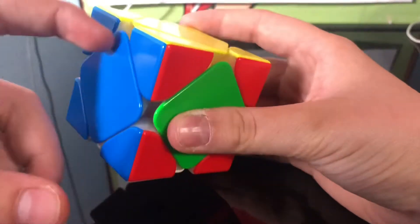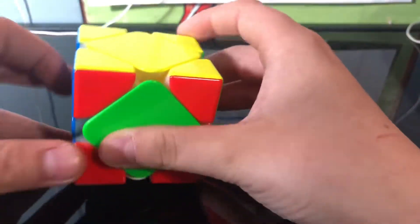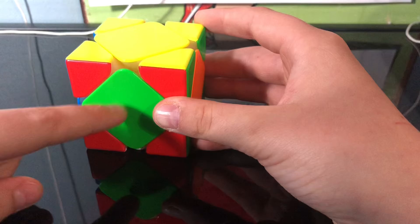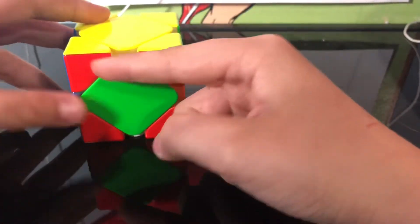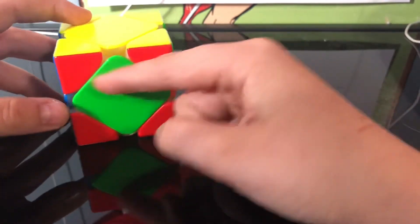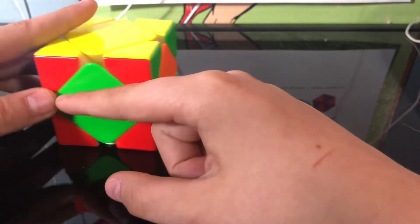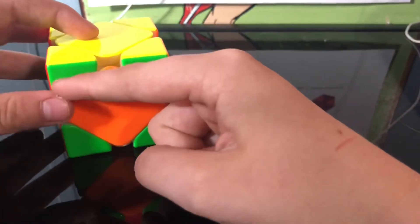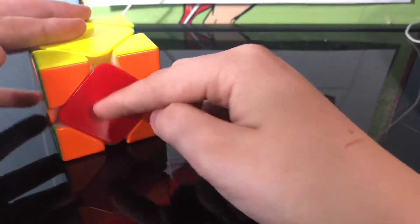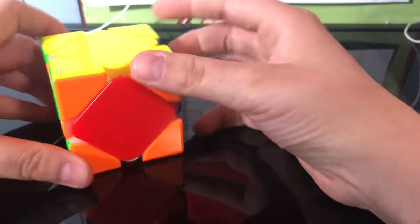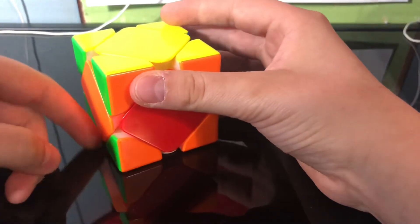Usually you'll have one side solved. You're gonna find the piece where the two colors are opposites. So red and green, they're not opposites. Green and orange, they're not opposites. But red and orange are. So you're gonna face that towards you and you're gonna find the middle one that doesn't match and face that up.